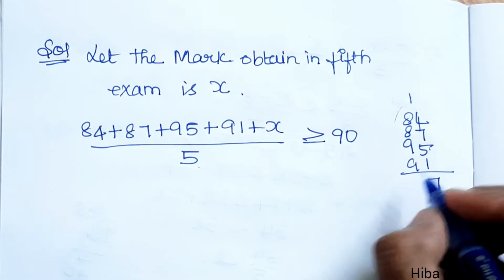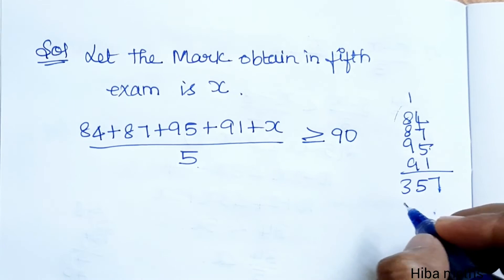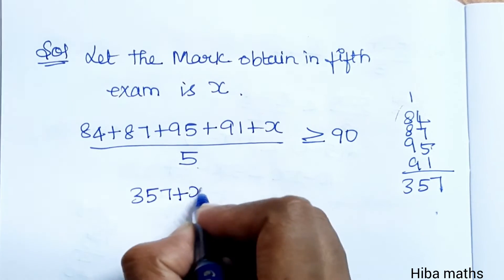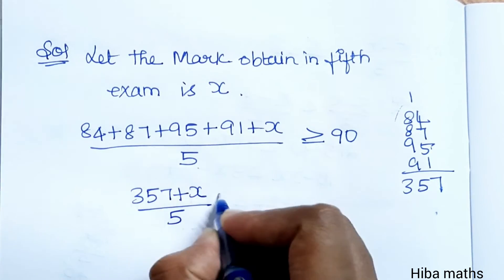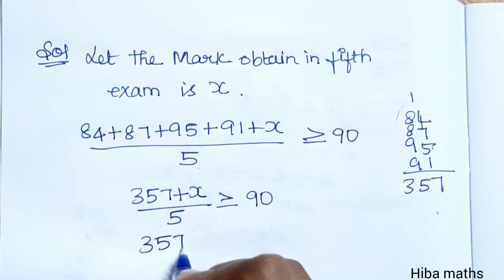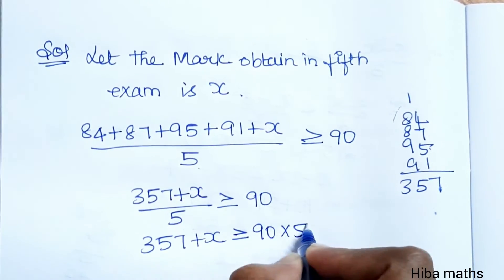So, 357 plus x, divided by 5, greater than or equal to 90. Now, the answer is 357 plus x greater than or equal to 90 into 5.